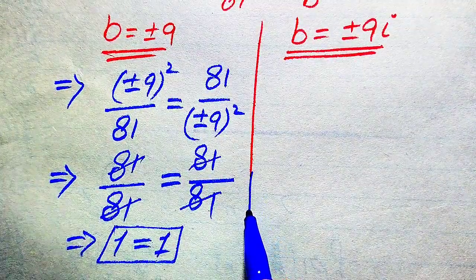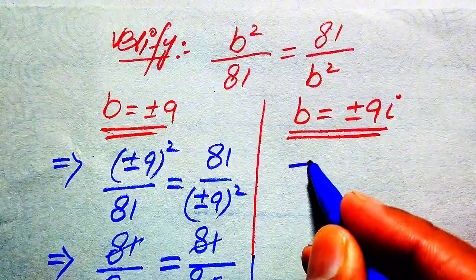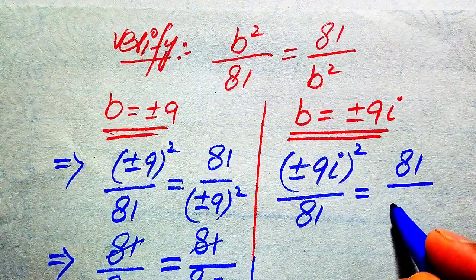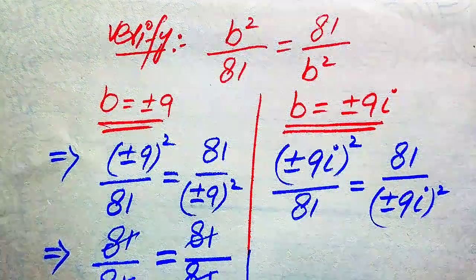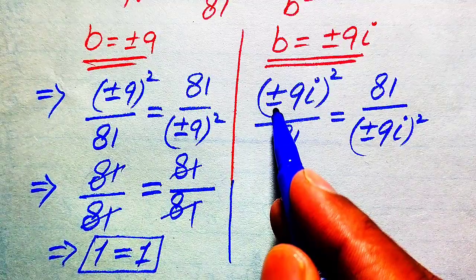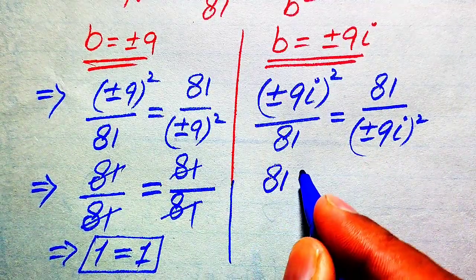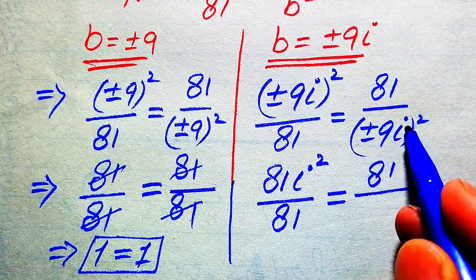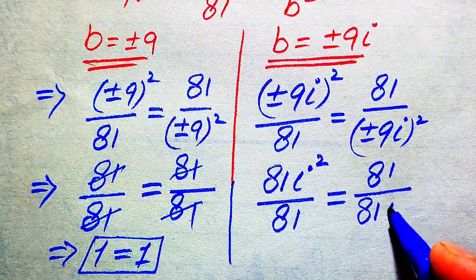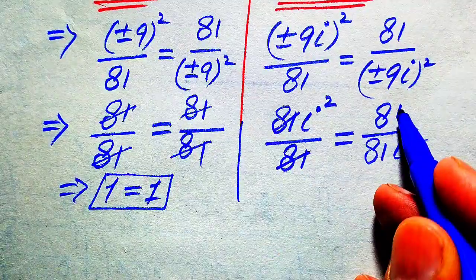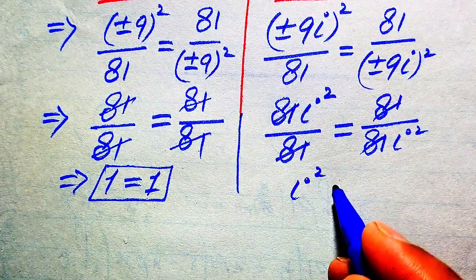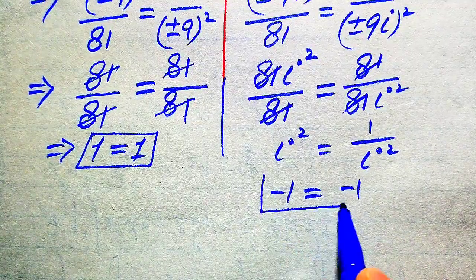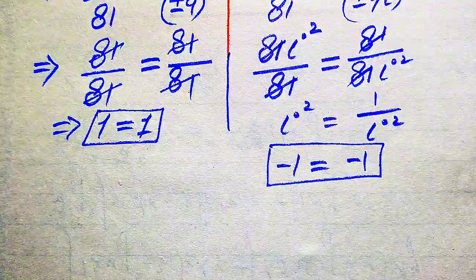For the second roots, substituting b equals plus or minus 9i gives (±9i)² divided by 81 equals 81 divided by (±9i)². The square of plus or minus becomes positive, 9² equals 81, and i² equals i², so we get 81i² divided by 81 equals 81 divided by 81i². Cancelling 81 on both sides gives i² equals 1 over i². Since i² equals minus 1 and 1 over i² also equals minus 1, both sides are equal, confirming b equals plus or minus 9i is also verified.